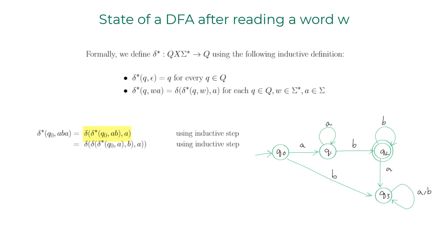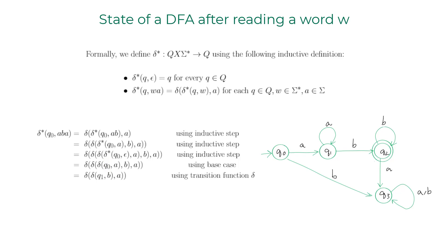Applying the inductive step once more, I get the empty string inside the parentheses. Delta star of q naught comma epsilon — from the base case — equals q naught. From here, all I use is the transition function delta: delta of q naught comma a goes to q1, then delta of q1 comma b goes to q2, then delta of q2 comma a goes to q3. We'll use this inductive definition of delta star when constructing the DFAs for the intersection and union languages.